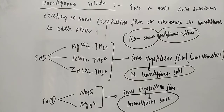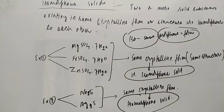So, isomorphous solids are those solids which have the same structure or same crystalline form. Examples: MgSO₄·7H₂O, FeSO₄·7H₂O, ZnSO₄·7H₂O, and also Na₂S and Ag₂S. Thank you so much for watching, friends.